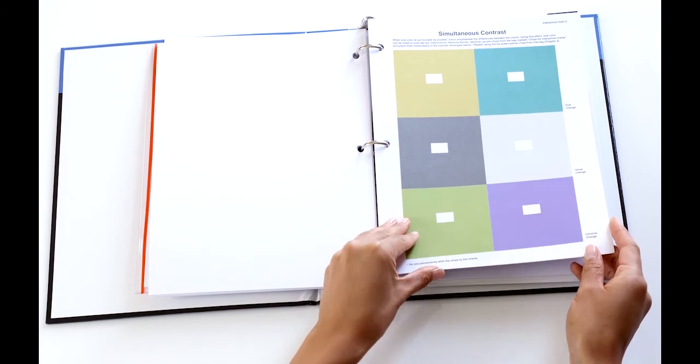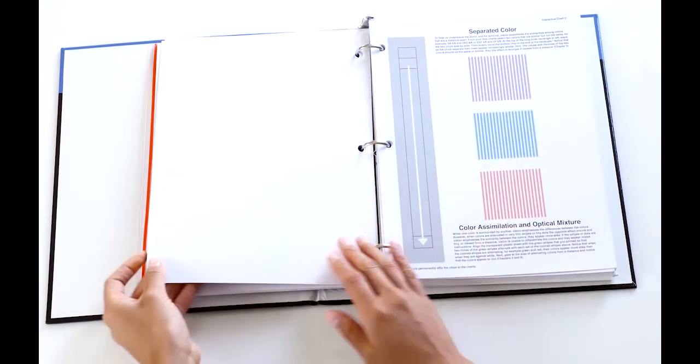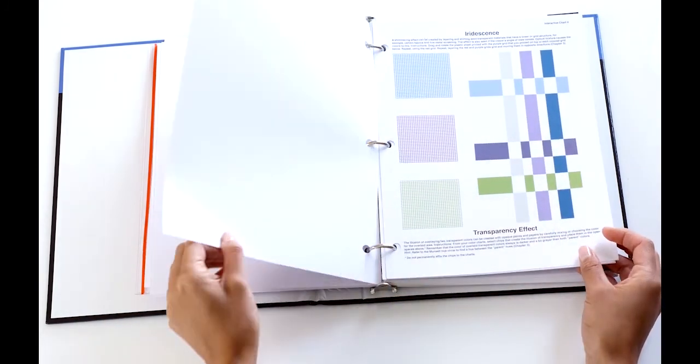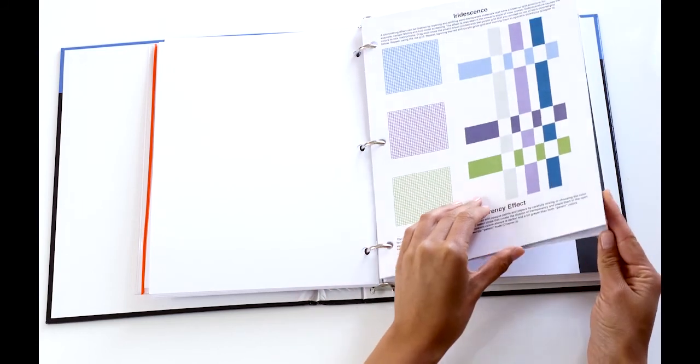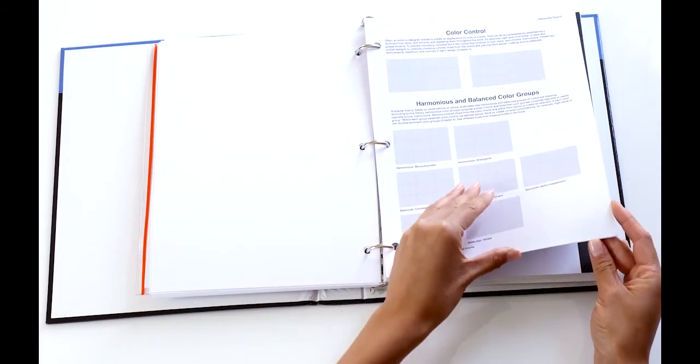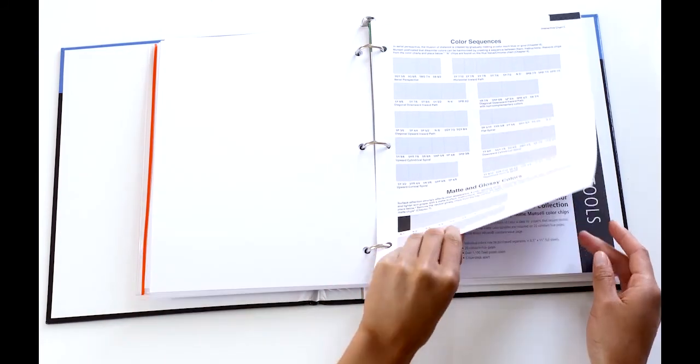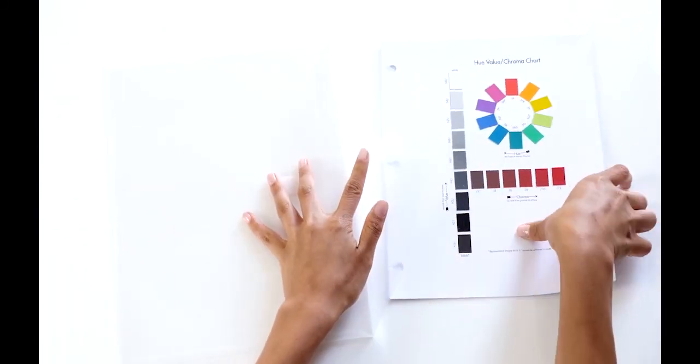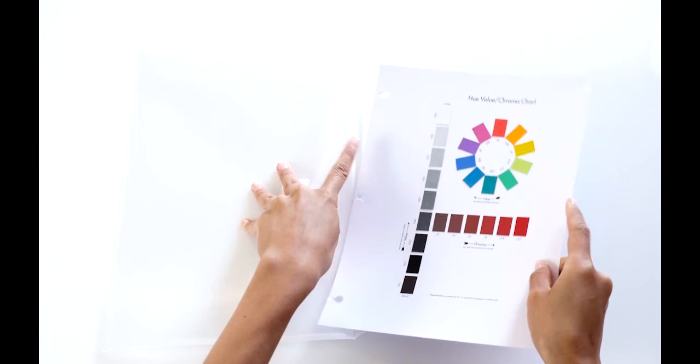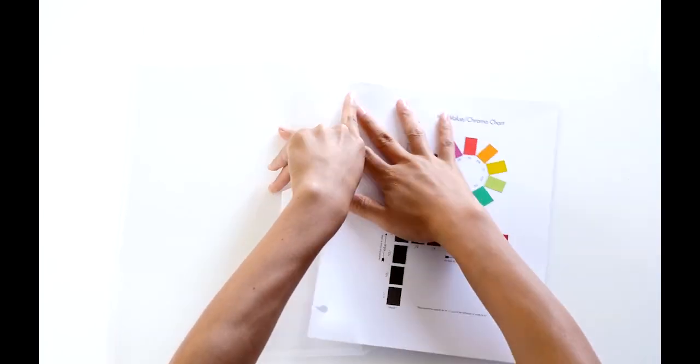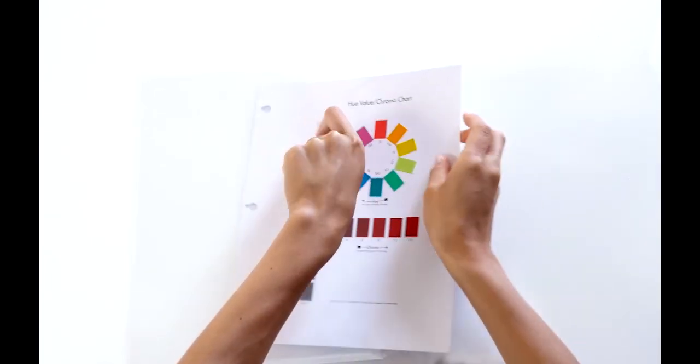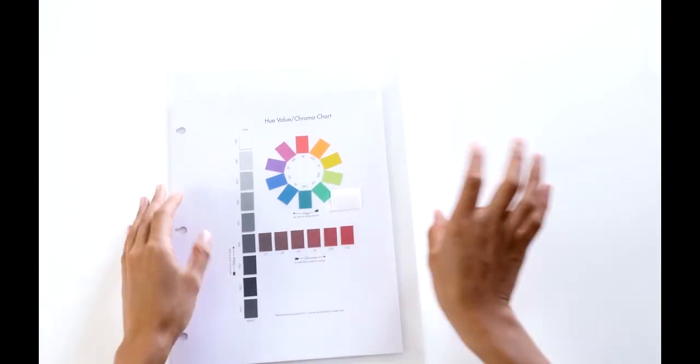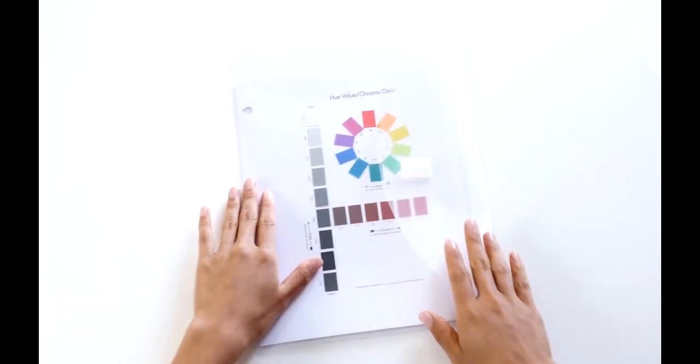To complete the interactive exercise charts, follow the instructions on each of the charts. The chips will stick to the charts for several weeks. For long term, place them in clear plastic zipper bags or glassine envelopes. Do not laminate the charts. This will alter the colour of the chips and make them unusable for completing the exercises.